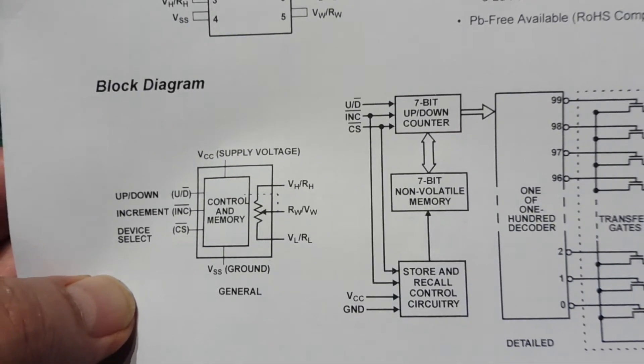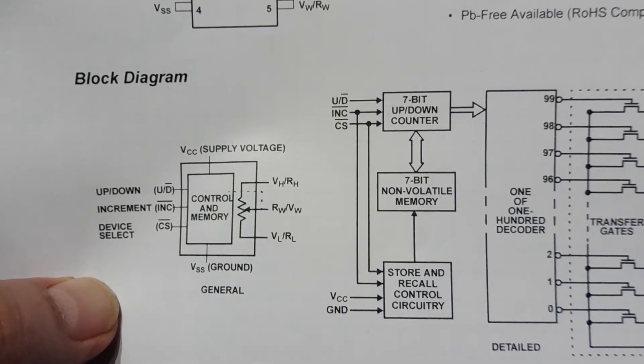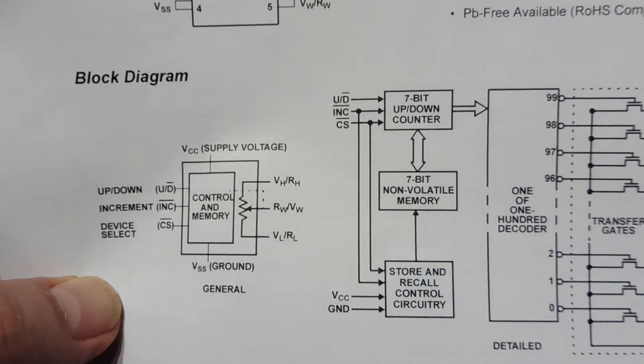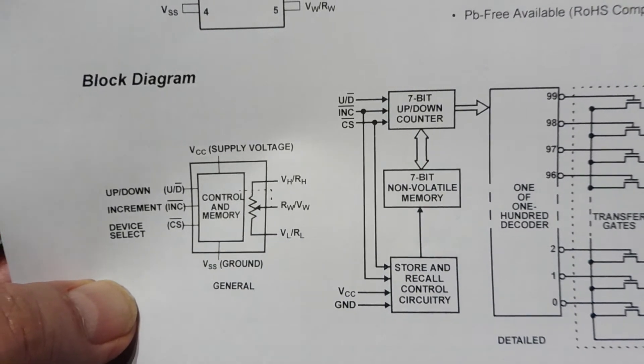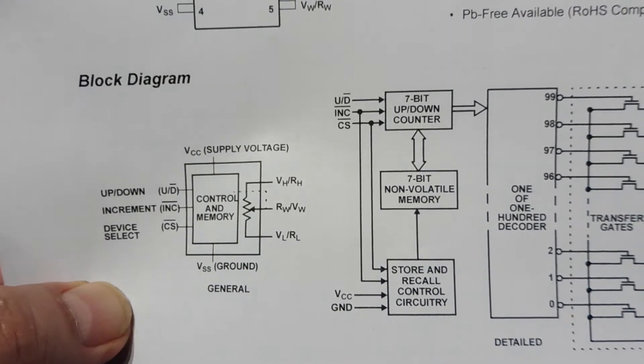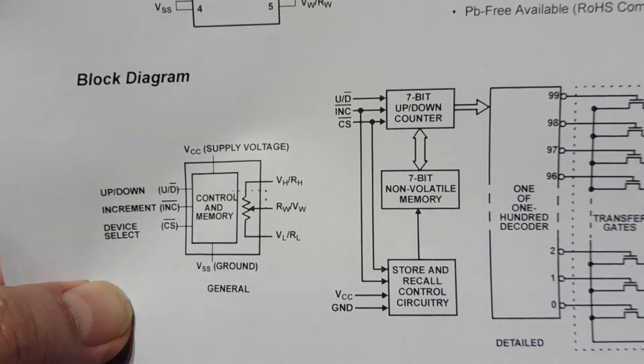Now the wiper current is limited to only a few milliamps. So we could only use this DigiPot for small signal applications like an audio volume control, or we could use it for a voltage divider feeding a high input impedance device like an op amp or a variable frequency drive. So we're kind of limited to the application.